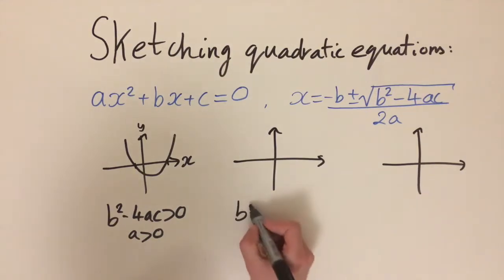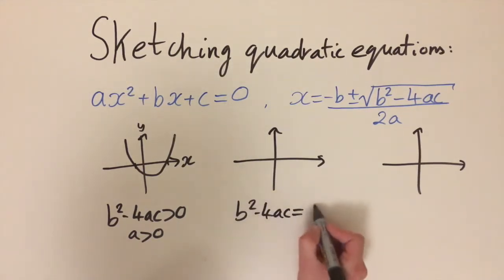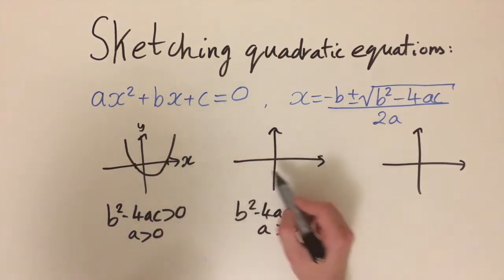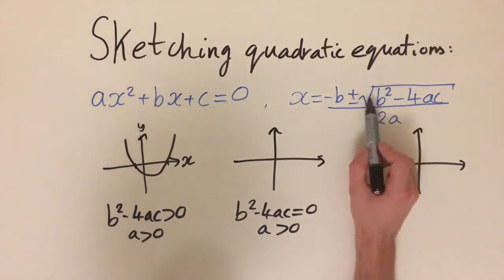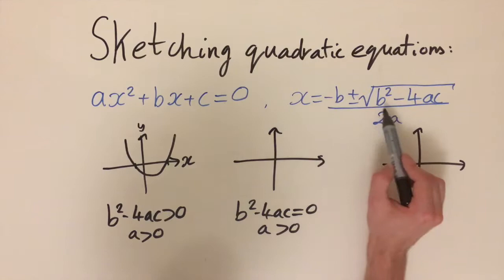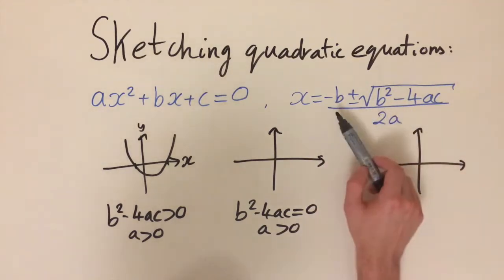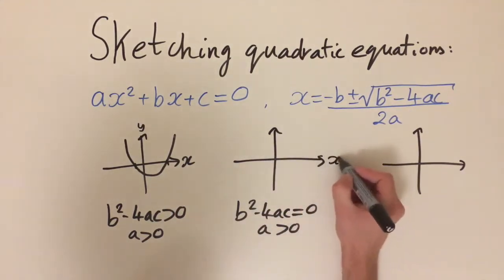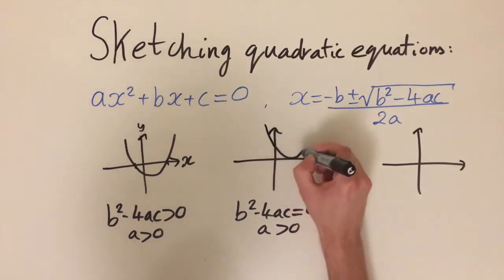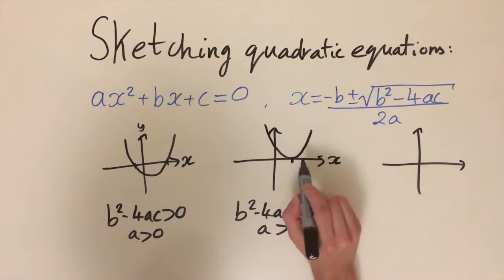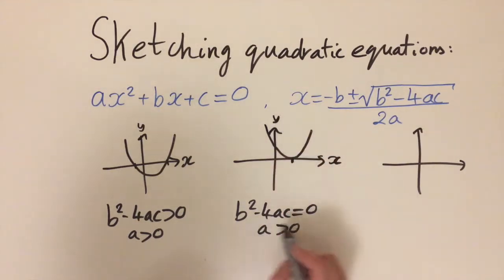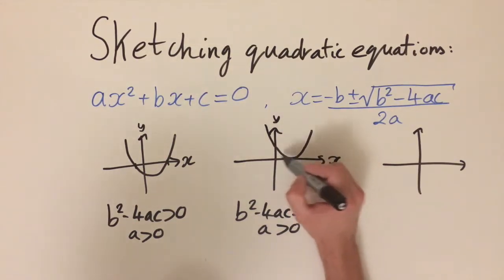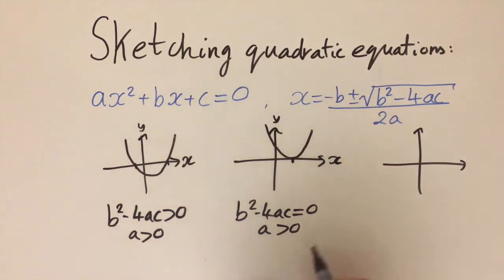If b squared minus 4ac equals zero and a is positive, the parabola goes upwards and we only get one solution: minus b over 2a. This corresponds to the graph only touching the x-axis at one point — it just kisses the x-axis, crossing at exactly one point. That's a very special case when the discriminant is zero.